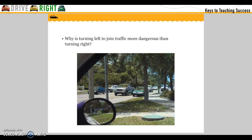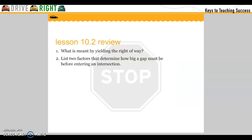Why is turning left to join traffic more dangerous than turning right? When turning left, you have to cross traffic. What is meant by yielding the right of way? List two factors that determine how big a gap must be before entering an intersection.